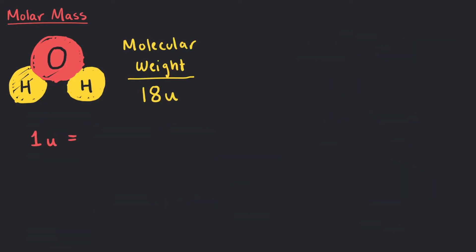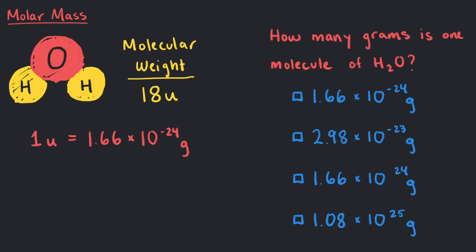If 1U is 1.66 times 10 to the negative 24 grams, how many grams is in one molecule? There are 18U in one molecule of water, so each of the 18 will have a mass of 1.66 times 10 to the negative 24 grams. So 18 times 1.66 times 10 to the negative 24 grams is 2.98 times 10 to the negative 23 grams.